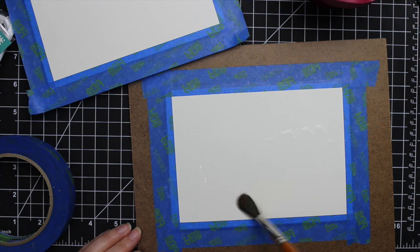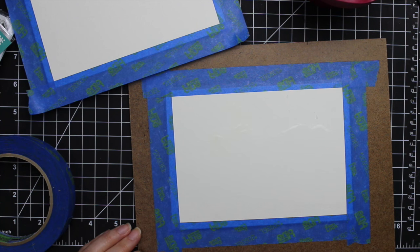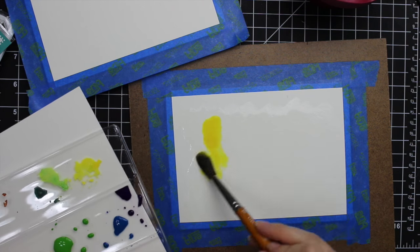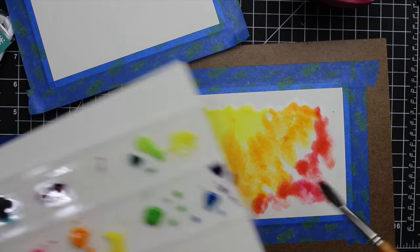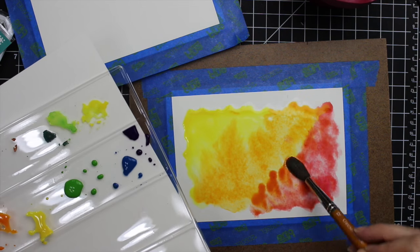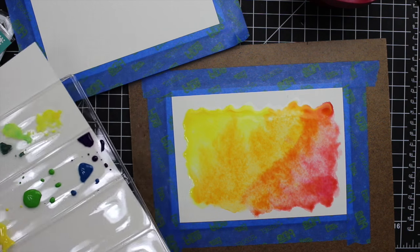And then I got a bigger brush. This is a Grumbacher brush that I have had for a while. It comes in a set of three I think. It's quite a big brush but I used it and I got the one panel completely wet. I used a lot of water and really saturated the watercolor paper.